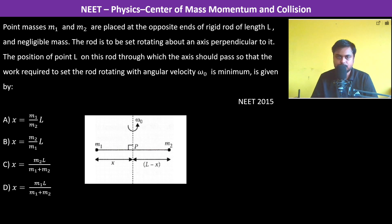Point masses M1 and M2 are placed at the opposite ends of a rigid rod of length L and negligible mass.